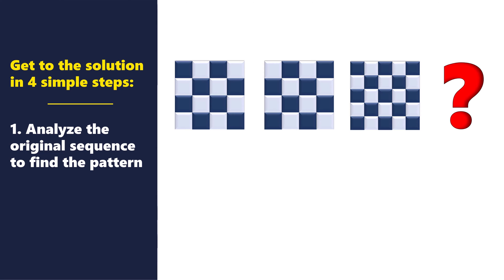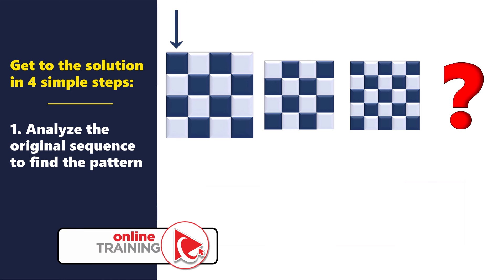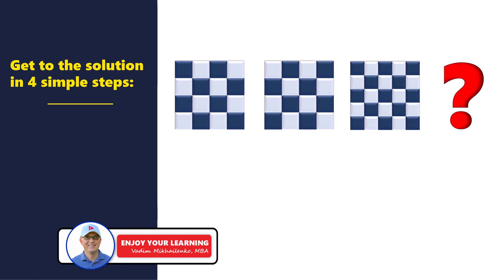In step one, we need to analyze the original sequence of squares to find the pattern. Let's take a close look at what we have. Even though all objects are squares, the two squares are 4x4, and the third square is 5x5. We also can see that all shapes have alternating colors. But you can see that the first shape starts with the darker square in the upper left corner, and the second square starts with the lighter square in the upper left corner. Now it's time to go to step two.